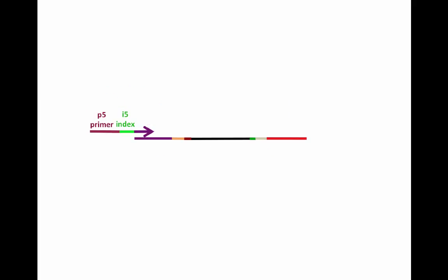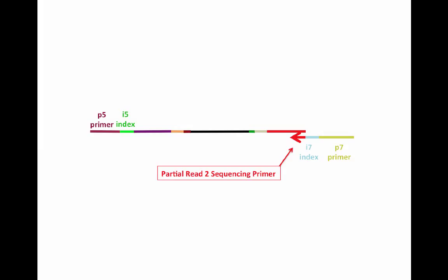The DNA polymerase extends from the I2-5 primer to complete the new top strand. During the next cycle of PCR, we'll follow the top strand. The bottom strand will repeat what we just did. We now incorporate the reverse primer that contains the P7 primer region for cluster generation, another barcode known as the I7 index, and part of the READ2 sequencing primer.